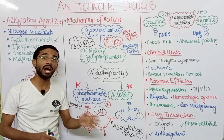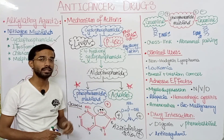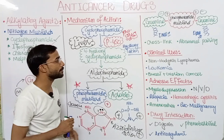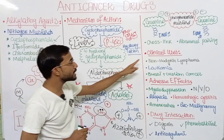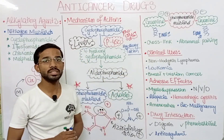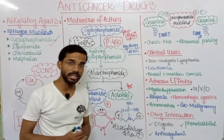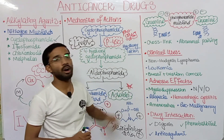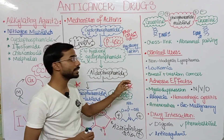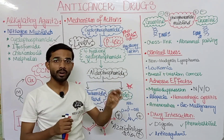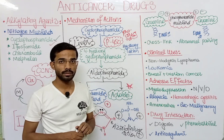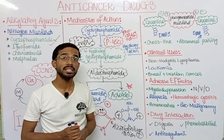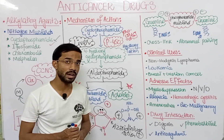No doubt normal cells will also be destroyed, but tumor cells are our major target. Regarding clinical uses, cyclophosphamide is used in non-Hodgkin lymphoma, leukemia, and breast and ovarian cancer. These are the more specific cancers in which cyclophosphamide is used.